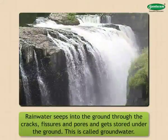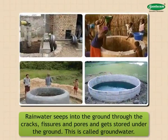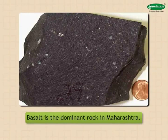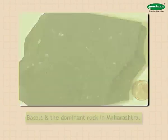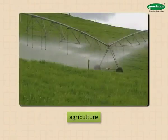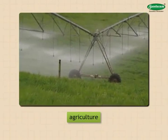Basalt is the dominant rock in Maharashtra. As this is a hard and impervious (non-porous) rock, the ground water availability in this rock is quite limited. Wells and tube wells are used to extract water along the river banks, in the areas of porous rock, and in the alluvial tracts. This water is used mainly for agriculture. Due to the growing use of ground water in the state, it is now proving inadequate to feed wells and tube wells, and in some parts they are going dry.